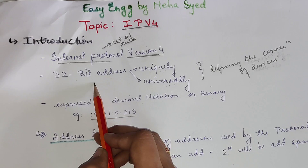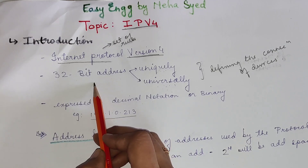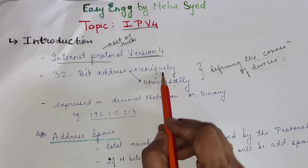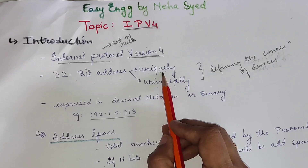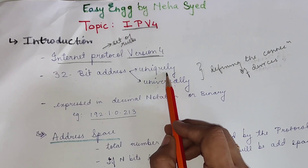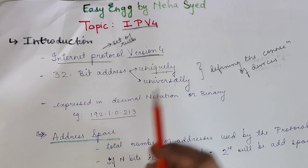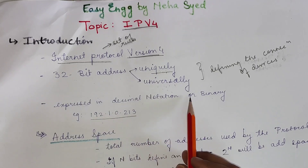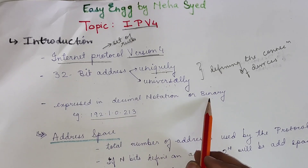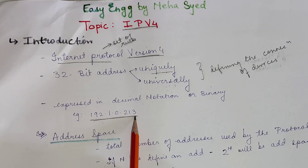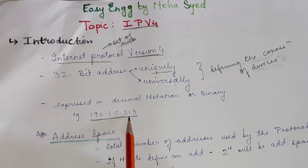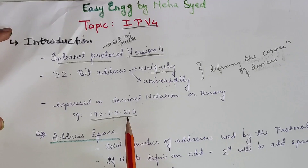We use this 32-bit address to define the connection of a device. It is unique in the sense that one address can be defined or given to only one device — no two devices can have the same address. That's why it is called unique all over the Internet. It is expressed in decimal notation or binary notation, and here is a simple example of an IPv4 address in decimal format.